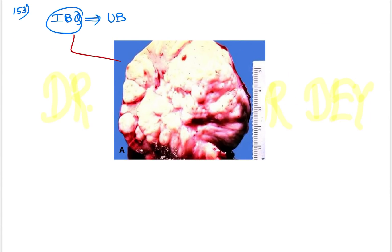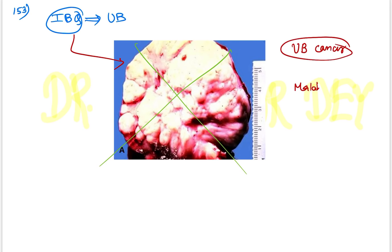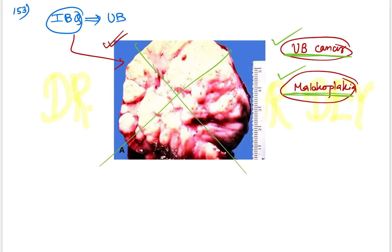Question 153: This was an image-based question. The actual image given in the exam was not available on Google. This was a controversial question — some faculties are saying it is urinary bladder cancer, others say malacoplakia. Nobody knows the exact image. If you find the image, please post it in the comment section.